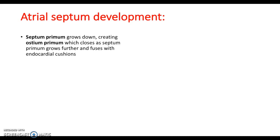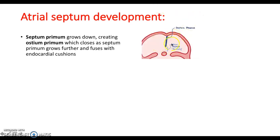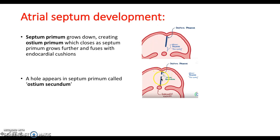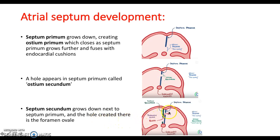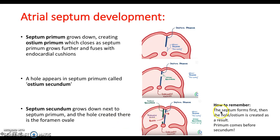Let's talk about how the atrial septum develops. First, the septum primum grows down, creating the osteum primum, which closes as the septum primum goes further and fuses with the endocardial cushions. You can see it growing here to form the osteum primum, which is the first opening. Secondly, a hole appears in the septum primum called osteum secundum. Thirdly, the septum secundum grows down next to the septum primum, and the hole created there is the foramen ovale. The septum forms first, then the hole osteum is created. Primum comes before secundum.